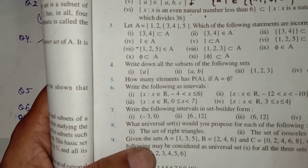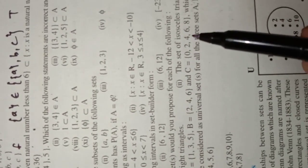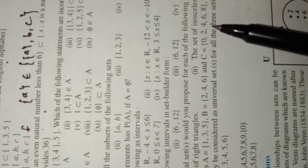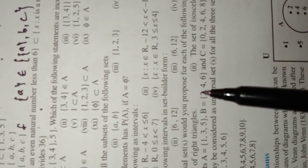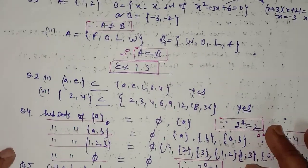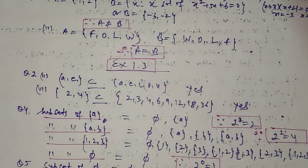In question number 9, we have set A containing {1,3,5,2,4,6}, set B, and set C containing {0,2,4,6,8}. You have to decide which can be the universal set for these sets. The set containing elements {0,1,2,3,4,5,6,7,8,9,10} is a universal set for these three sets, since the universal set is the largest set of which all the given sets are subsets. This completes Exercise 1.3.